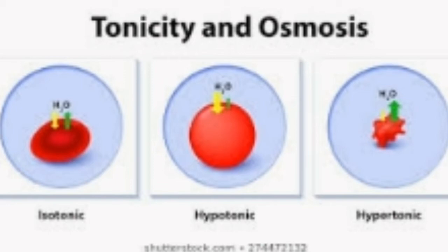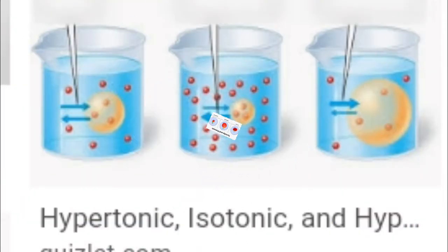'Hypo' means less than or lower. So the outer solution will be of lower concentration and the solution inside the cell will be of higher concentration. The movement of liquid takes place from the outer environment towards the cell, making the cell swell up. The solution outside the cell is less concentrated than the cell sap; as a result, water moves into the cell — that is, the process of endosmosis takes place — and the protoplasm therefore increases in size.